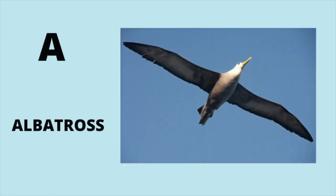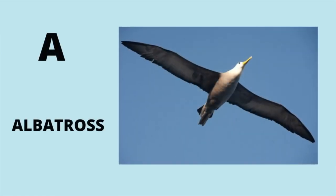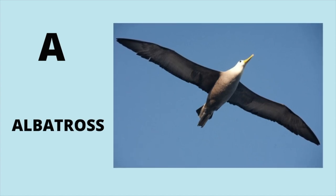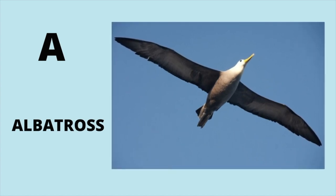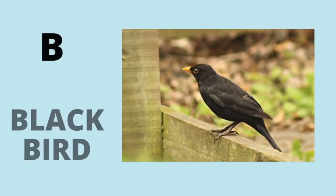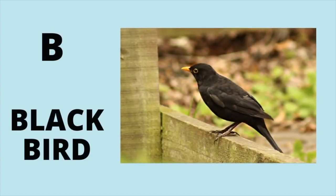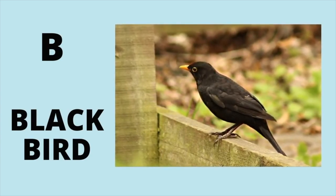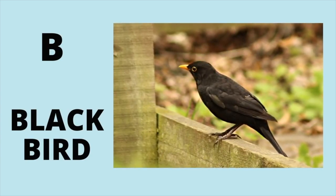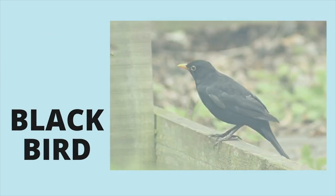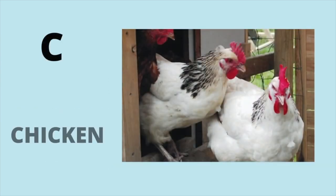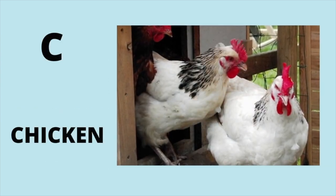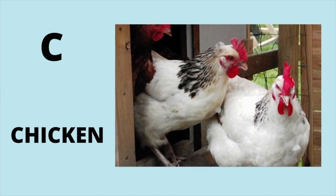A is for Albatross. Ah, albatross. B is for Blackbird. Buh, Blackbird. C is for Chicken. Chuh, Chicken.